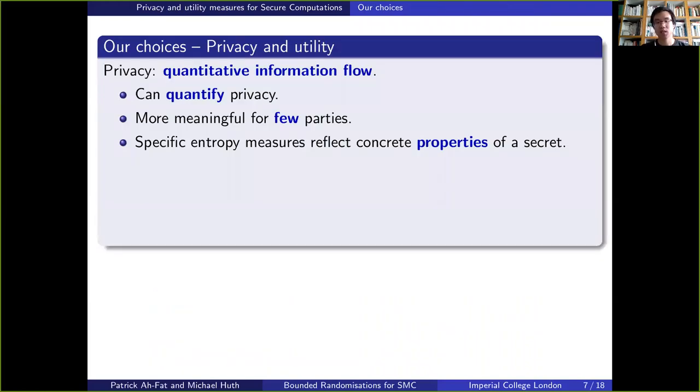For those reasons, we decided to base our model on different notions of privacy and utility, which I will present next. We decided to make use of entropy-based measures stemming from quantitative information flow in order to quantify privacy in a way that we believe to be more meaningful for few parties. Another advantage is that specific entropy measures can reflect concrete properties of a secret, such as the probability to guess a secret or part of a secret in one try or in n tries, or it can reflect the expected minimum number of binary questions we'd have to answer in order to guess a secret.